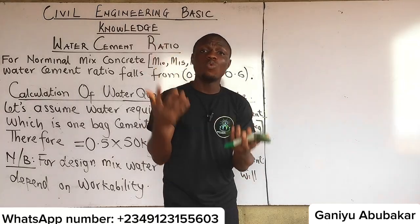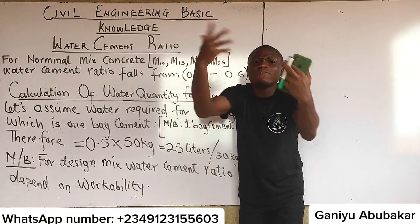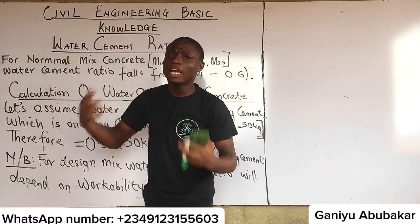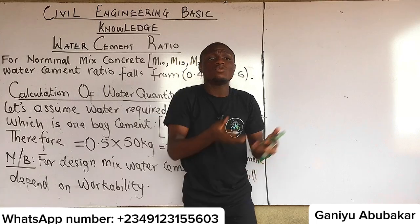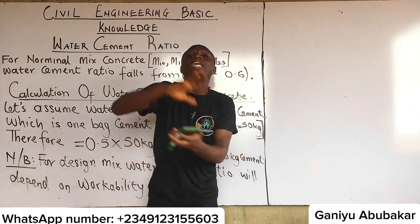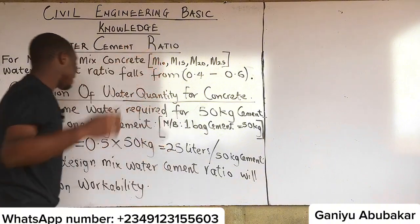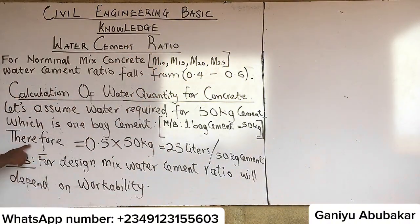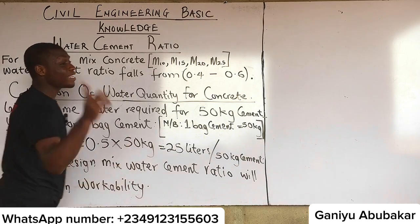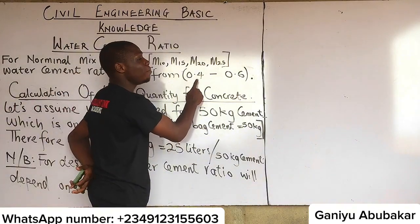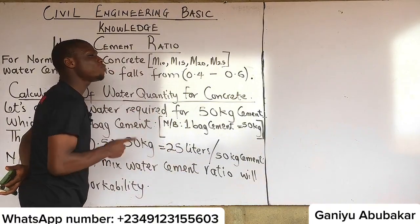How many liters of water do I need to dilute this cement to standard? The idea is quite simple. I'll pick 0.5 and multiply it by 50 kg. When it comes to water cement ratio, the value ranges among three options: 0.4, 0.5, or 0.6.